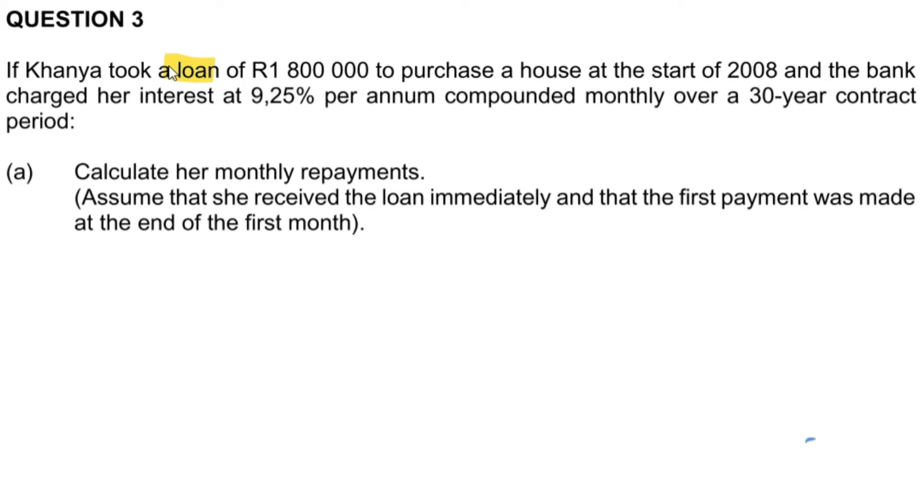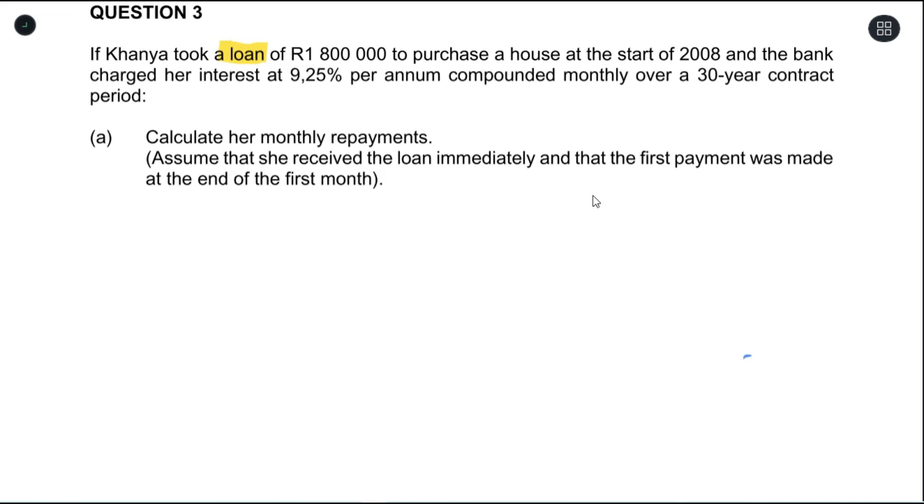Because we are working with loans, we understand that we have to use present value - present value annuity. Present value represents the amount of money I'm going to get right now and I would be returning the money as a monthly repayment over a period of time.